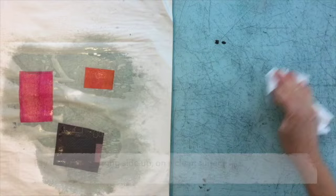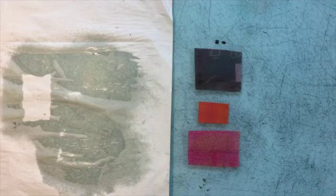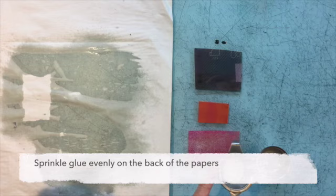Keeping your papers upside down, move them onto a clean dry surface and then get your glue and you're going to just sprinkle a thin layer evenly over the back of the wet paper.